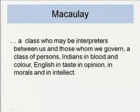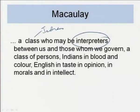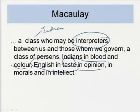According to Gauri Vishwanathan, there were two aims: masking colonial exploitation and providing administrative stability, for which English language and English literature were seen as highly desirable. Macaulay said in his famous Minute: 'We need to create a class who may be interpreters between us and those whom we govern — a class of persons Indian in blood and colour, but English in taste, in opinion, in morals, and in intellect.'